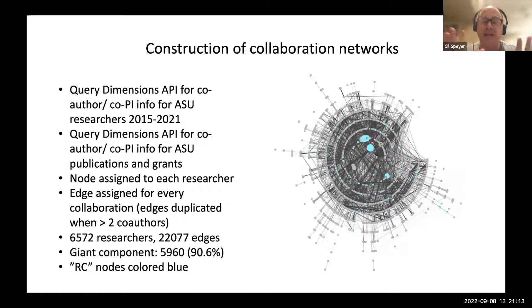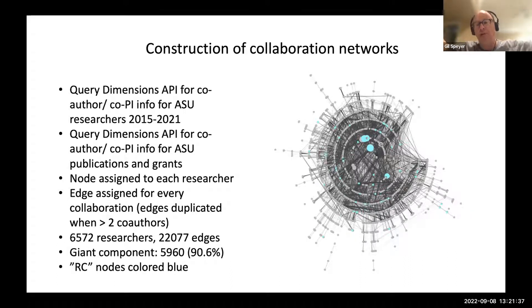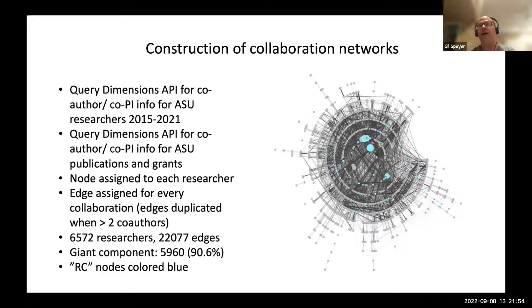That said, this allows us to get a visualization of an entire research community and do an assessment. What was the idea of this assessment? We identified the researchers who had accounts on our cluster and ran some numbers on these folks in comparison to other nodes — the people that don't have accounts. What we found was that statistically, across several metrics, the research computing nodes were statistically higher in every metric. For example, the average number of collaborations was statistically higher for research computing nodes.